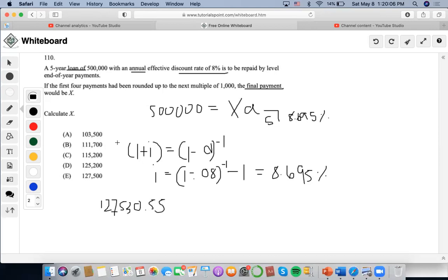Now, they're saying that the first four payments have been rounded up to the next multiple of a thousand, which means that I can round this up to $128,000. So now, since this is geared towards finding what the final payment is, then we're going to have to set this amount equal to the first four payments that have already been made at the annual effective that we just found, plus the x that we're trying to find, the v to the 5, because this is geared towards the last payment. And then we're going to set this equal to the original loan of $500,000.